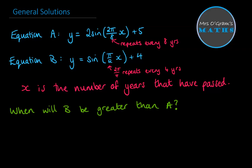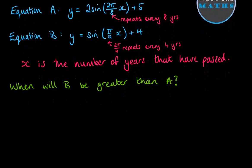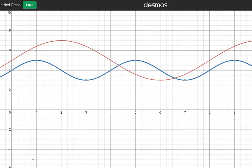So back to the question, then you'd be asked something like, when will B be greater than A? So looking at those graphs that we have here, there are times when equation B goes above equation A between those two points just there.